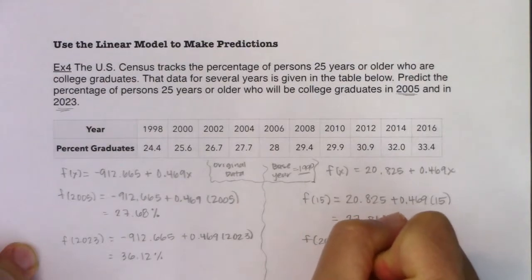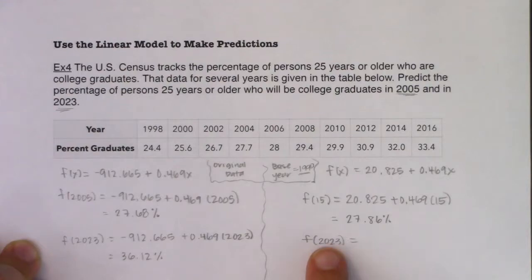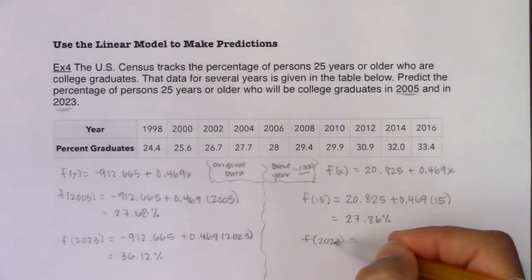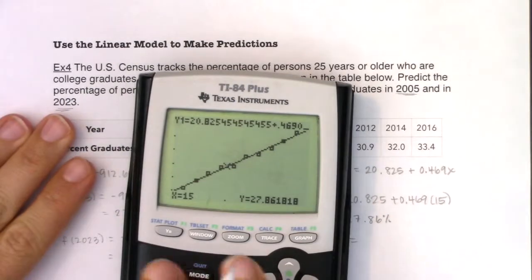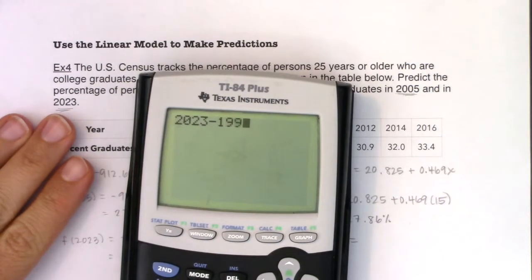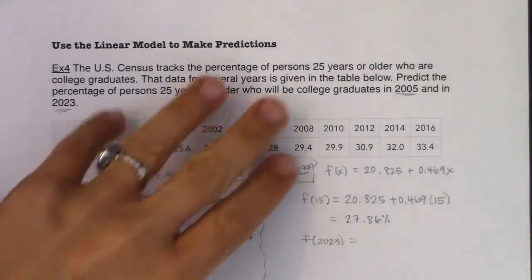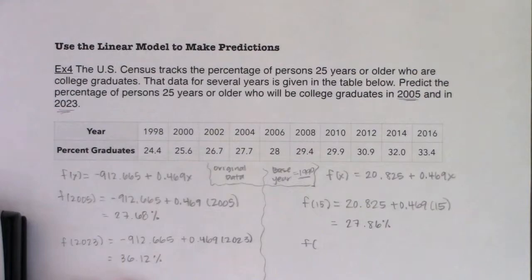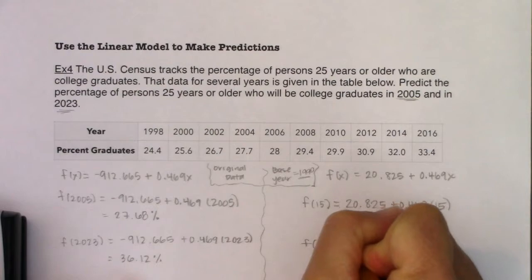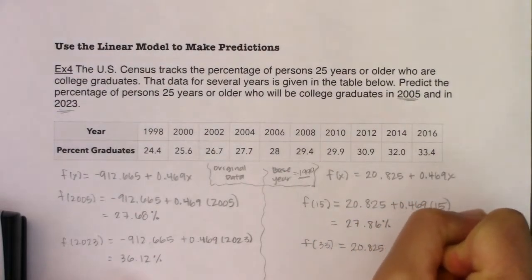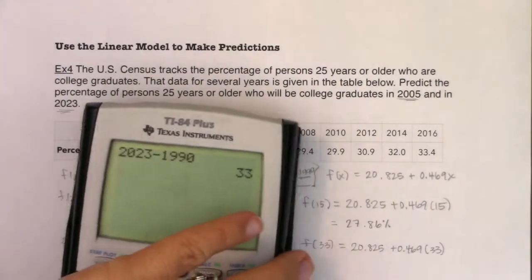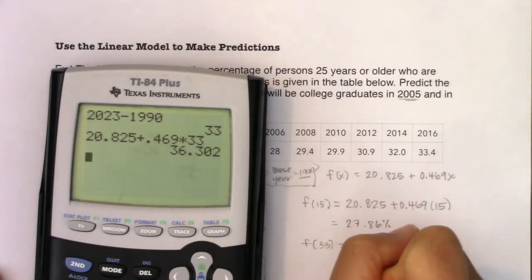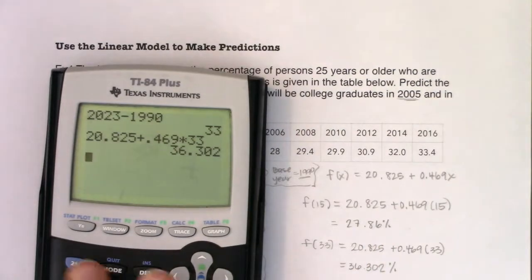For 2023 with base year data, I do not type in 2023 — that would represent 2023 years after 1990, not the year 2023. Always take your target year minus your base year: 2023 − 1990 = 33. So f(33) = 20.825 + 0.469 × 33 ≈ 36.302%. The units are percent.